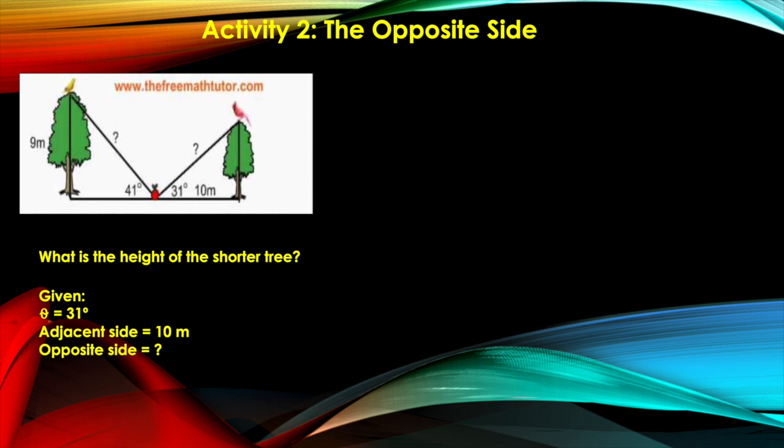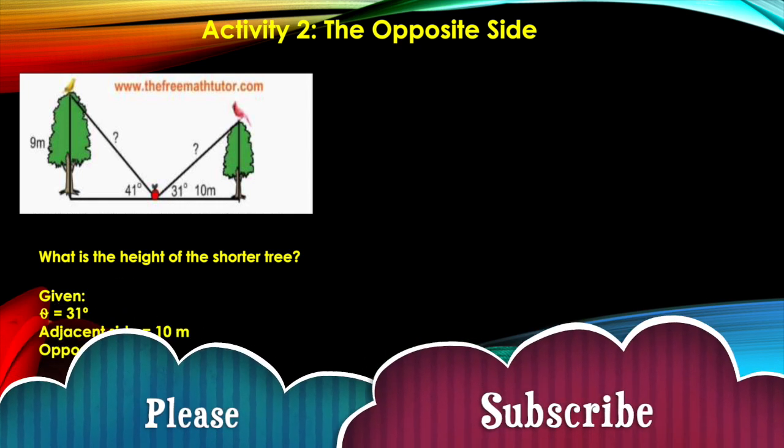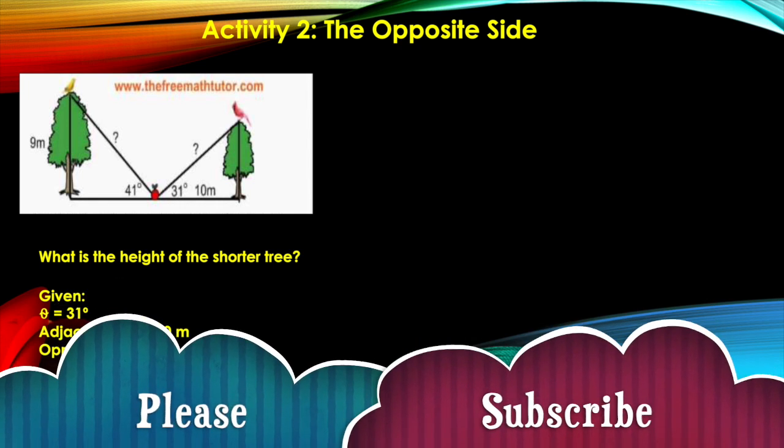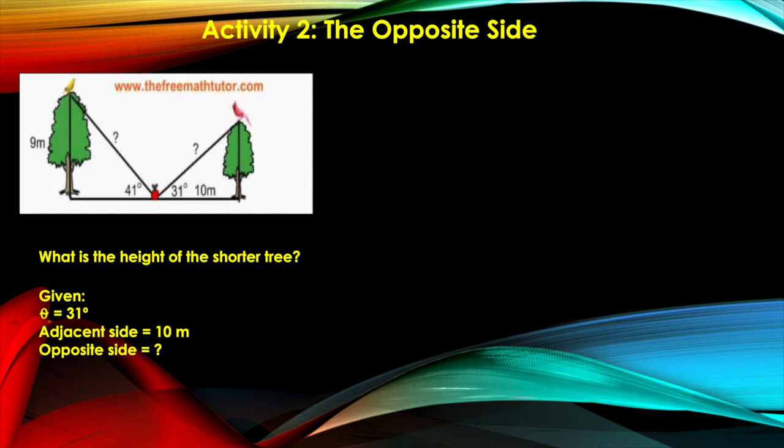So if we're talking about adjacent side and opposite side here, there are actually two trigonometric functions: we have the tangent and the cotangent. The tangent function is defined as the opposite over the adjacent, and inverse to that is the cotangent, defined as adjacent side over the opposite side. So which of these two functions?